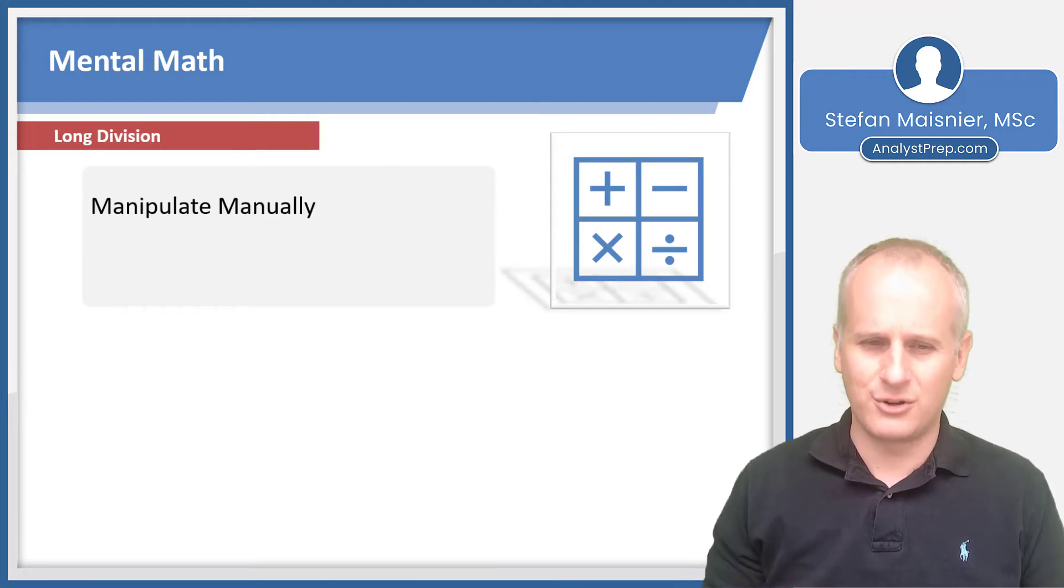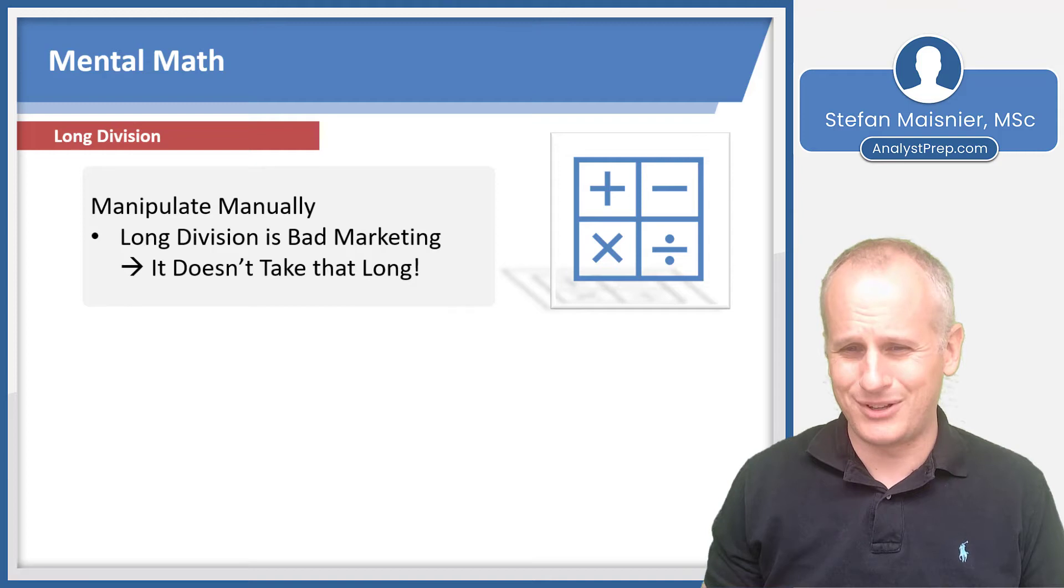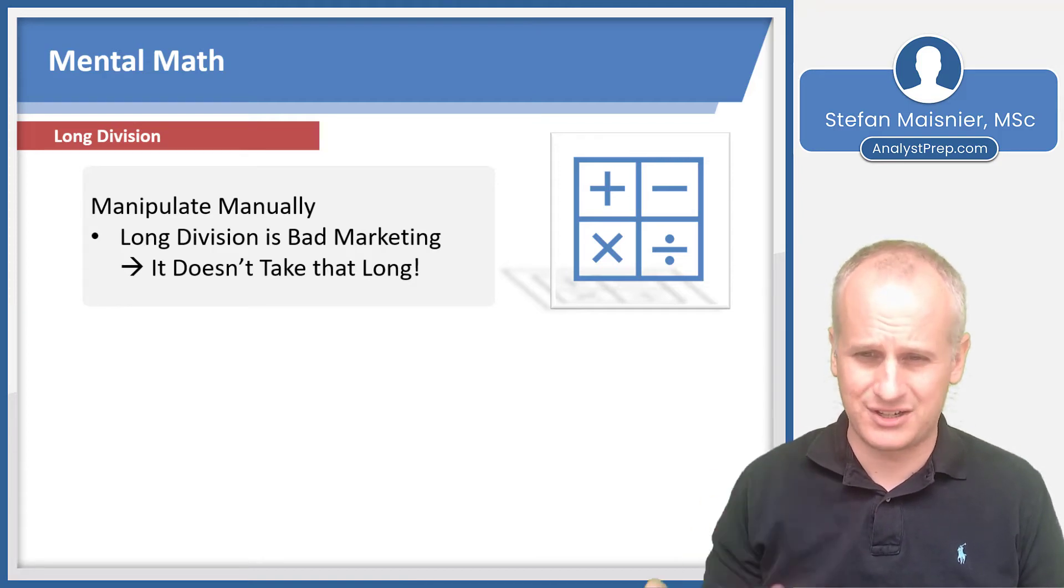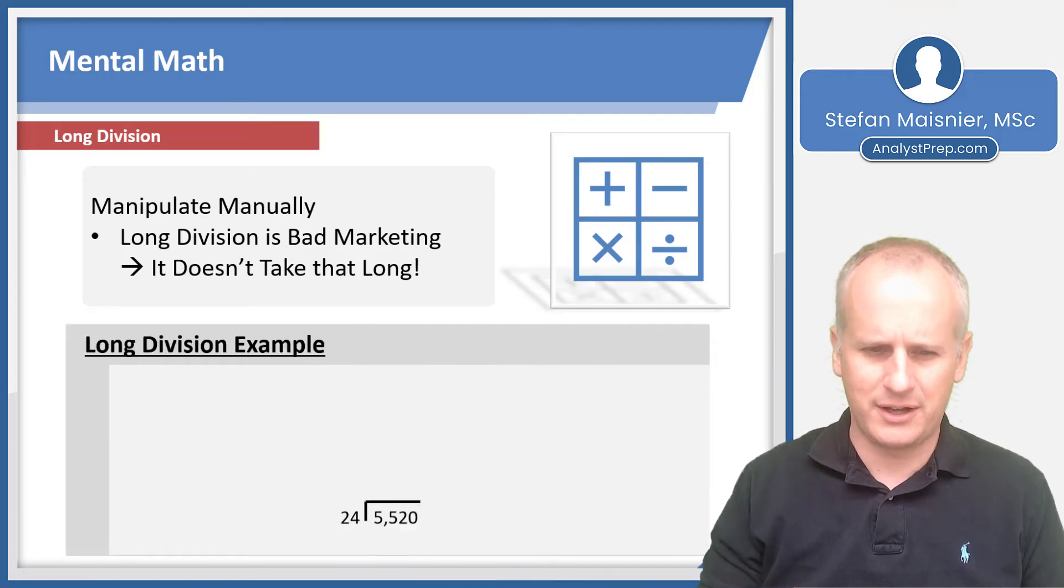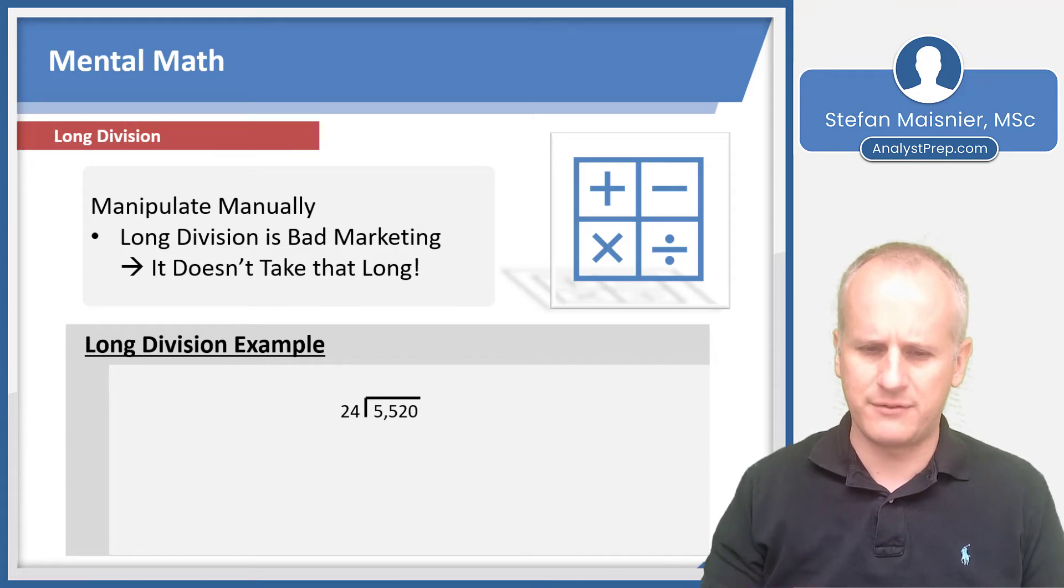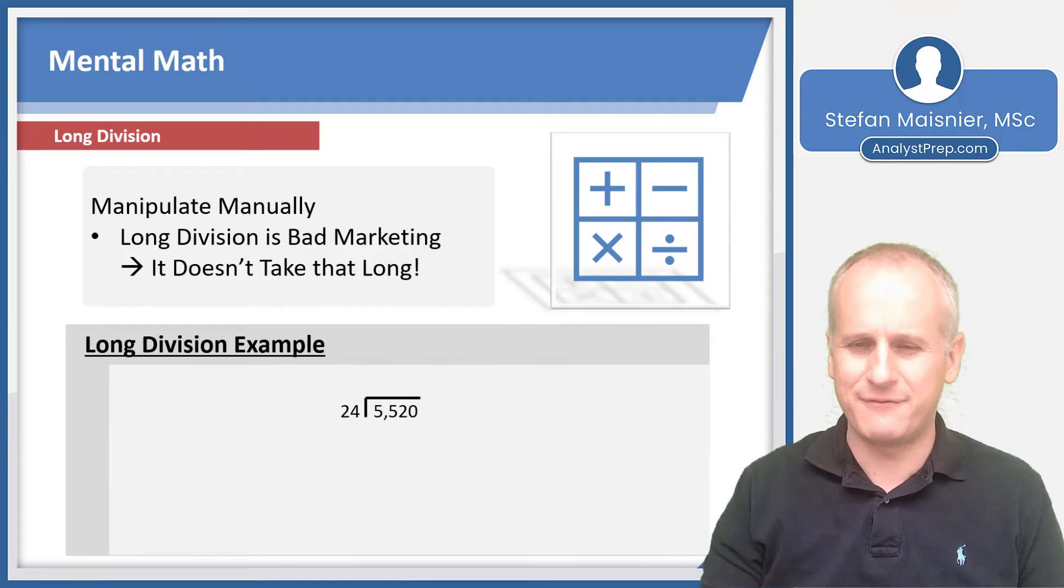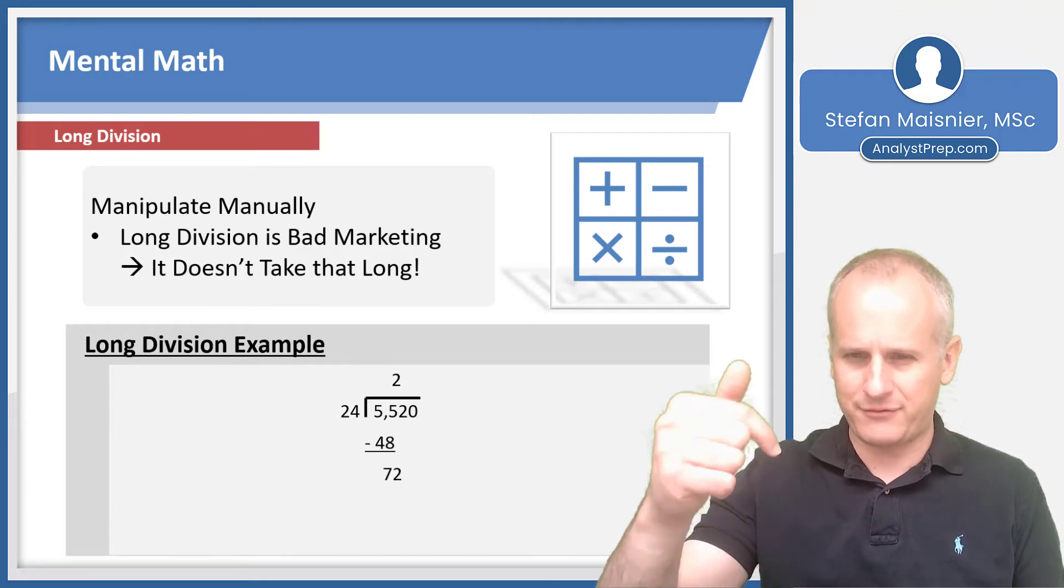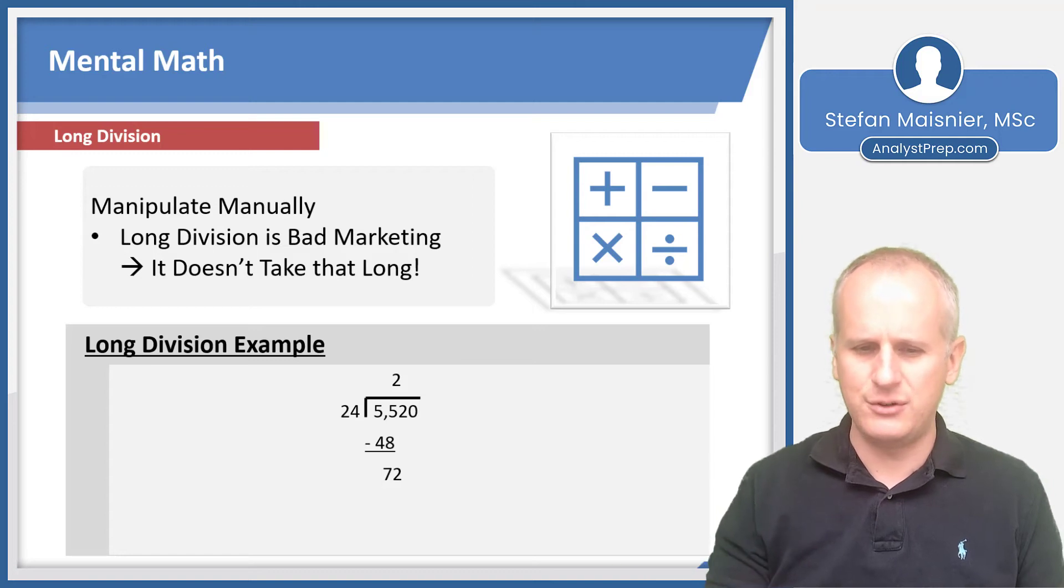Long division. With long division, you're just going to want to manipulate manually. Long division is really just bad marketing. It doesn't take that long. Let's take a look at an example. We've got 24 going into 5,520. 24 is going to go into 55 twice because two times 24 is 48. Then we subtract out the 48 from the 55, and we get 7. Then we have to drop down the 2, and we've got 24 goes into 72 three times. Three times 24 is exactly 72, so we subtract out the 72, we get zero, and that zero just goes as our final digit. We discover that 5,520 divided by 24 is 230.